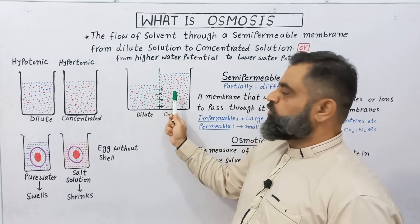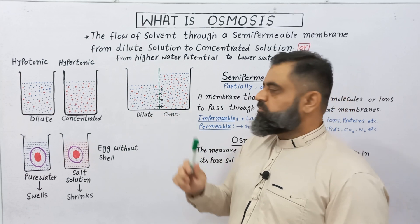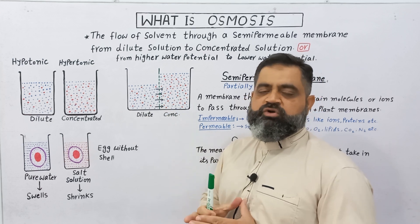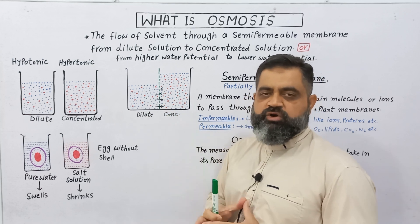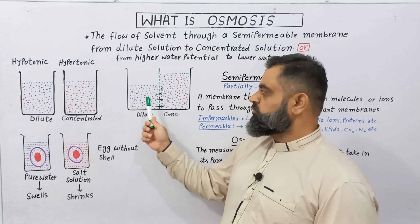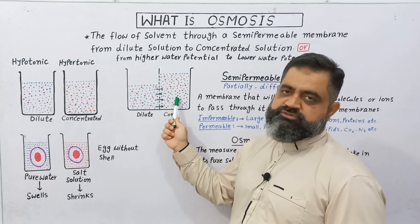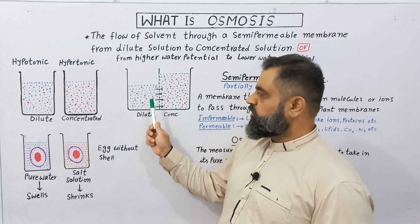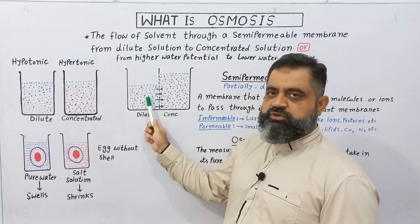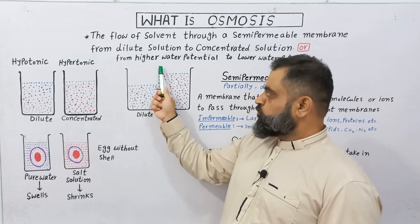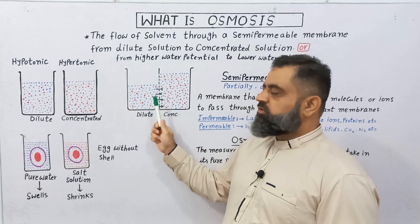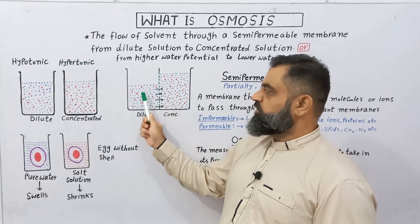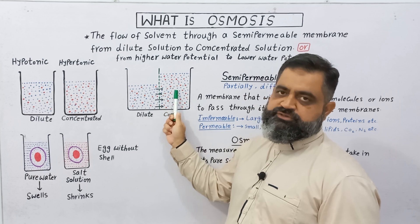Some water molecules can also move back, but the greater amount of water molecules will move from dilute to concentrated solution. This is known as osmosis — the movement of water molecules or solvent molecules through a semi-permeable membrane from higher water potential to lower water potential, or from dilute solution to concentrated solution.